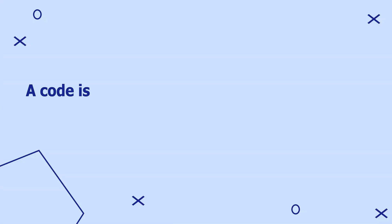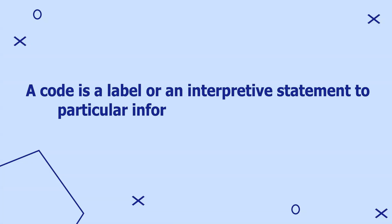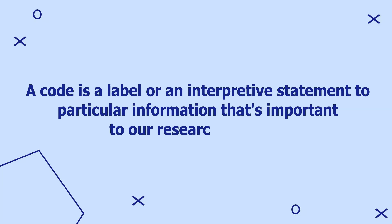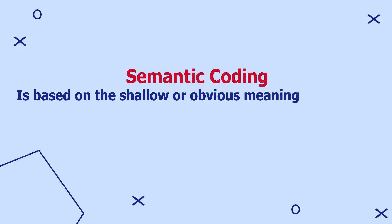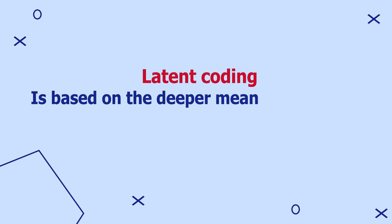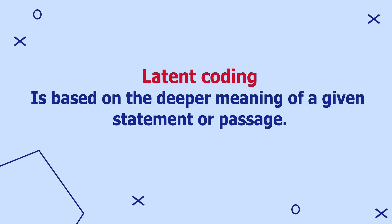Let's begin with hand coding using Microsoft Word. Before we begin coding, let's have a few definitions. A code is simply a label or an interpretive statement to particular information that's important to a research question. By performing qualitative coding, we are simply tagging or labeling important information in our qualitative data set. We are going to be adopting two approaches to coding: one, semantic coding, which is based on the shallow or obvious meaning of language, and two, latent coding, which is based on the deeper meaning of a given statement or passage.